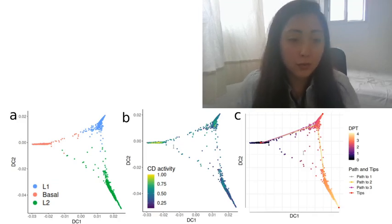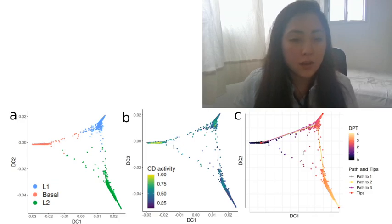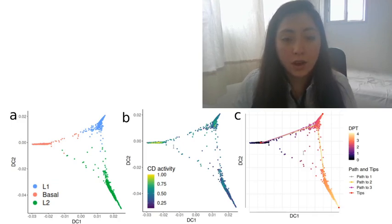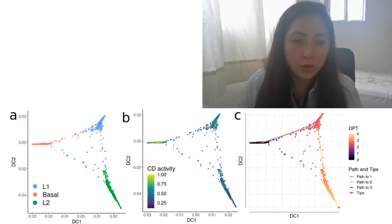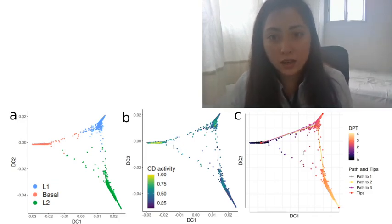So after applying this dimensionality reduction algorithm I obtained this plot which is Figure 1a, and then I colored the cells by the cell differentiation activity. So one can see that in the basal cluster the highest activity levels are seen.